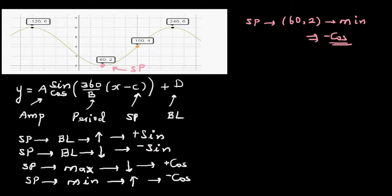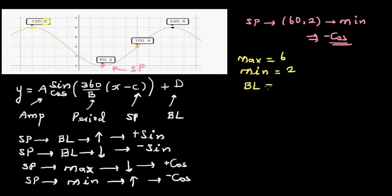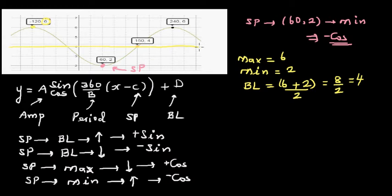Now to find A, B, C, and D: the maximum is 6 and the minimum is 2. The baseline is halfway between the maximum and minimum, so baseline = (6 + 2) ÷ 2 = 8 ÷ 2 = 4. So the baseline is y = 4.